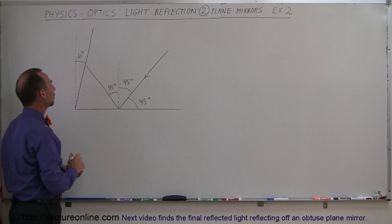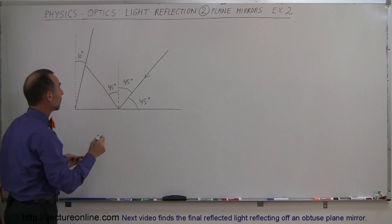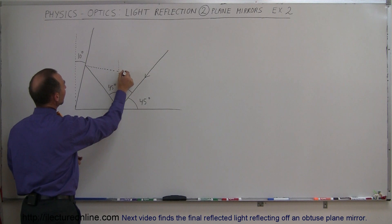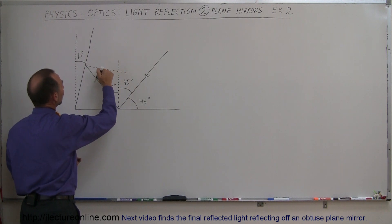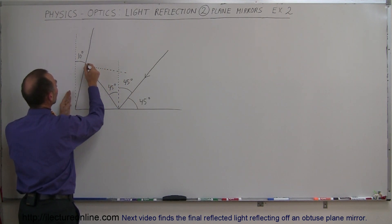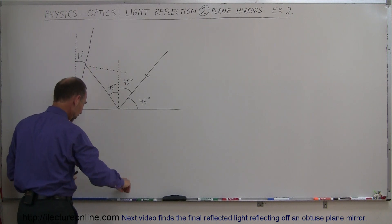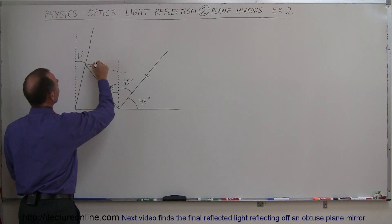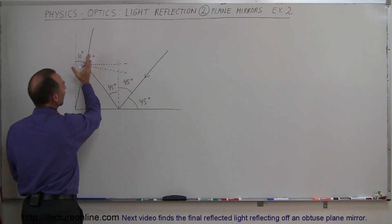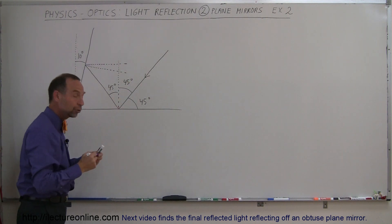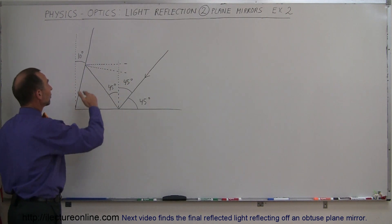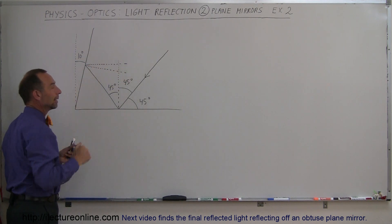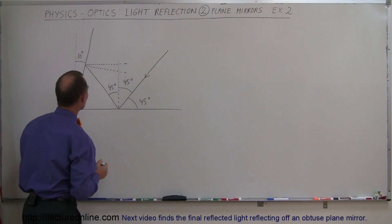Now the question is: what is the angle of incidence over here on the second mirror? We need to draw the perpendicular to the mirror, which is angled 10 degrees below the horizontal. If the mirror was straight up and down, the normal would be parallel to the horizontal. But because the mirror is angled at 10 degrees, the normal is now angled down 10 degrees, and we'll show how that changes things.